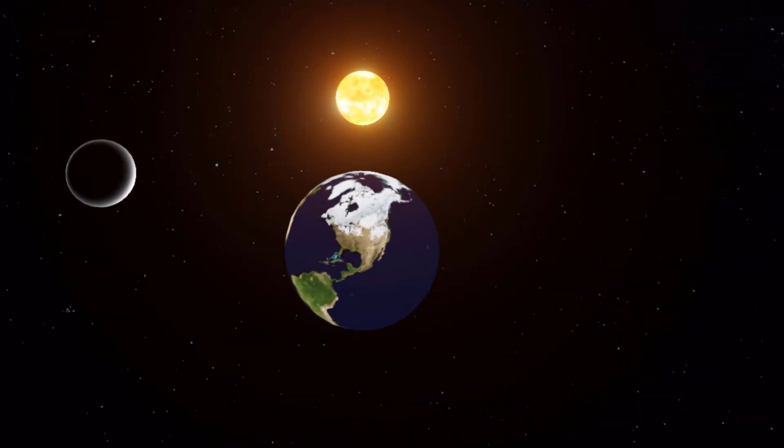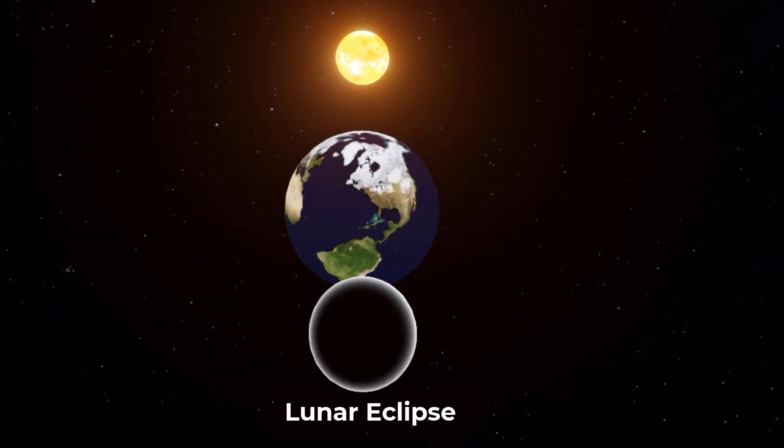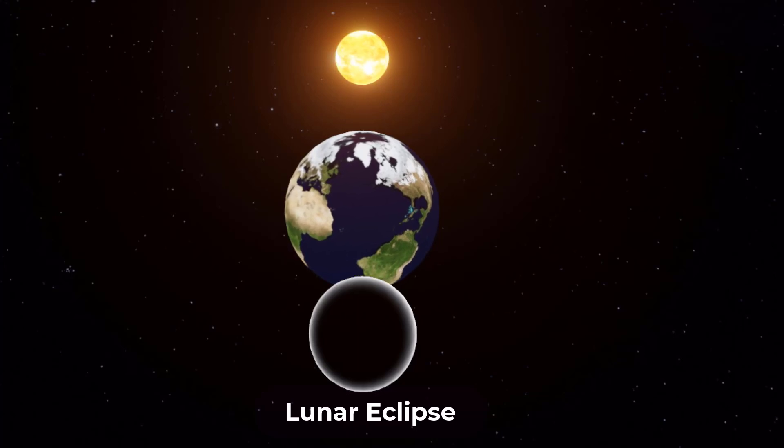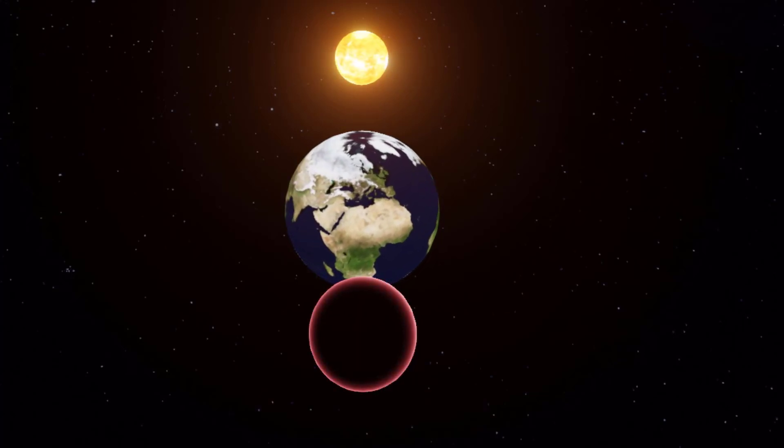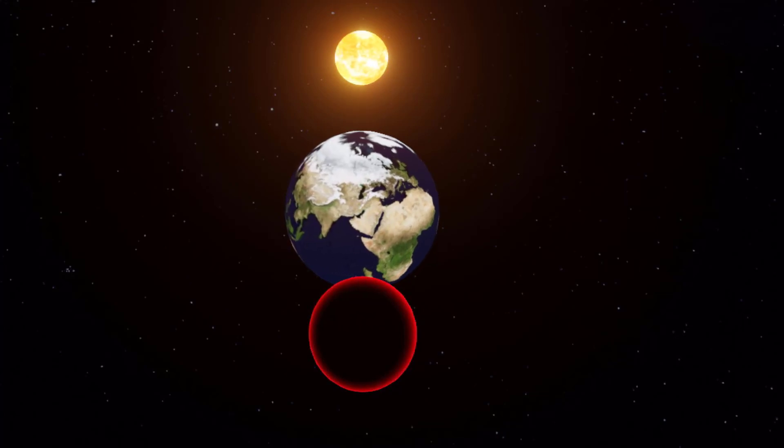During a lunar eclipse, the earth comes between the sun and the moon, casting a shadow on the moon's surface. This can cause the moon to take on a reddish hue, earning it the nickname Blood Moon.